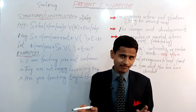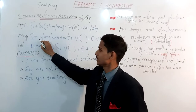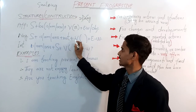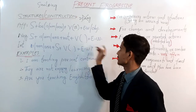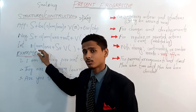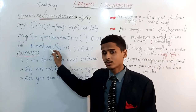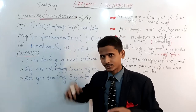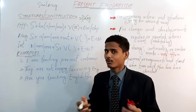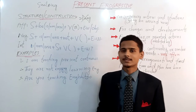The negative structure is: subject plus is/am/are plus 'not' to show negation, plus the fourth form of the main verb, plus extra word. Moving towards the interrogative, it begins with helping verbs or auxiliary verbs. We use is/am/are according to the nature of the subject — first, second, or third person — plus subject, plus the fourth form or present participle, plus extra word.